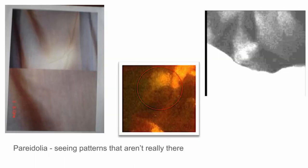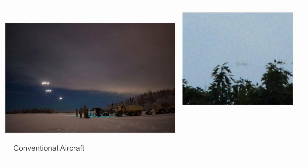Pareidolia is an interesting psychological phenomenon. The human brain is a pattern recognition machine and it's always looking for patterns. From the time I was a little kid, if I just looked up at the branches of trees, I would start to see faces form out of the branches. Conventional aircraft also generate reports — that looks pretty weird but it's actually just military cargo planes lined up to land in Alaska. If you didn't look at it real closely, you'd say, 'what is that? It's a flying saucer!' But it's actually just an aircraft.